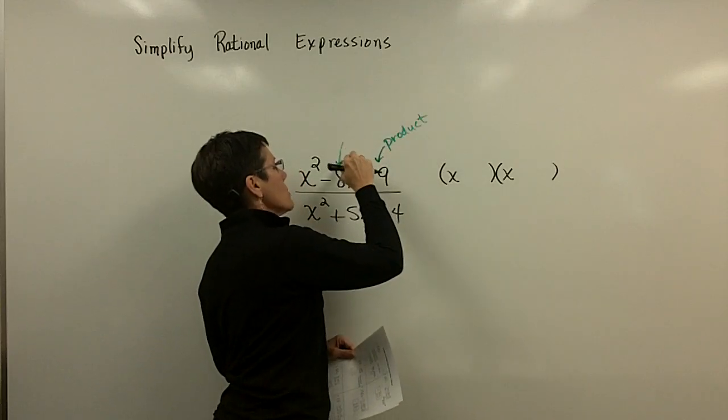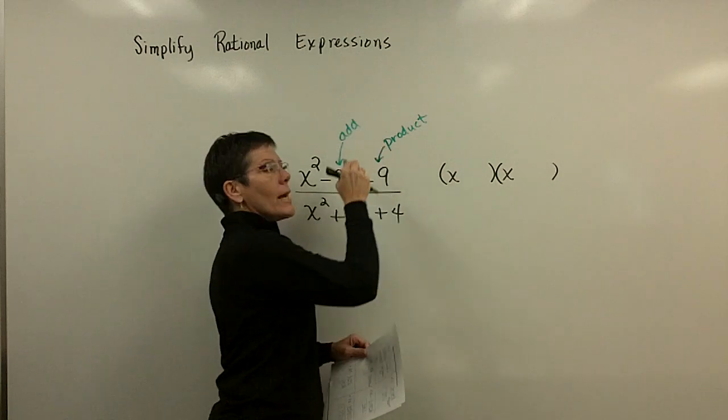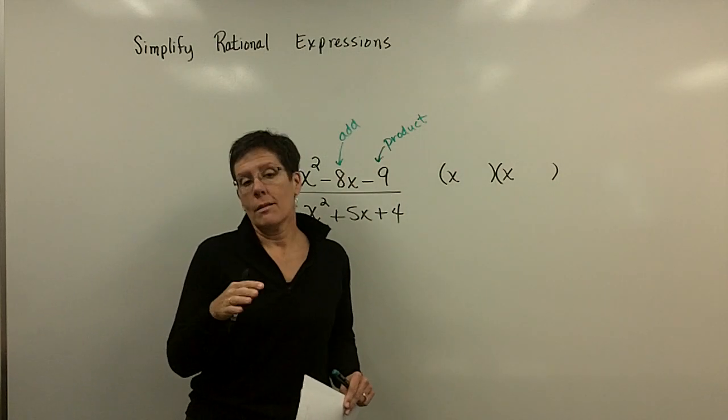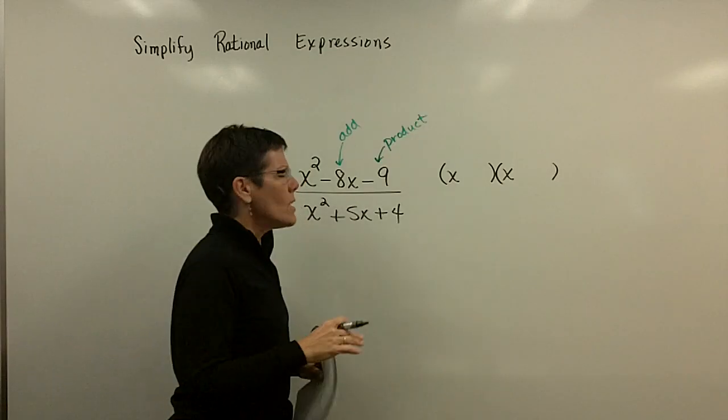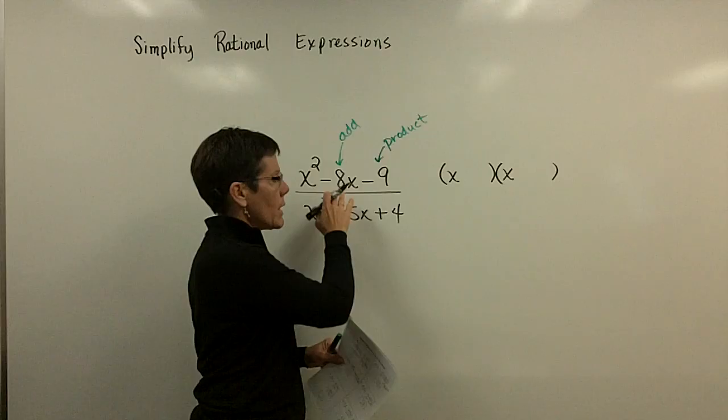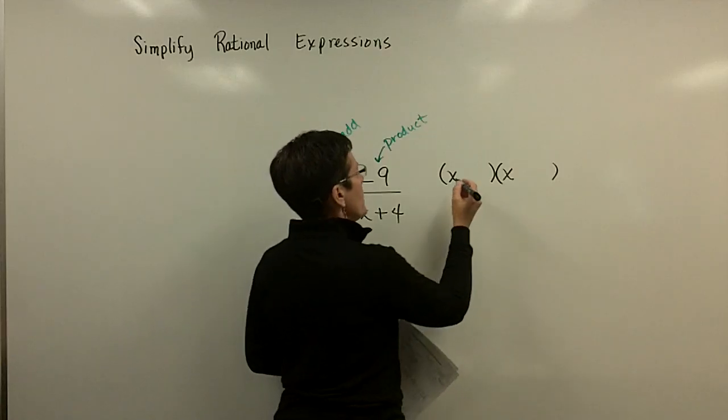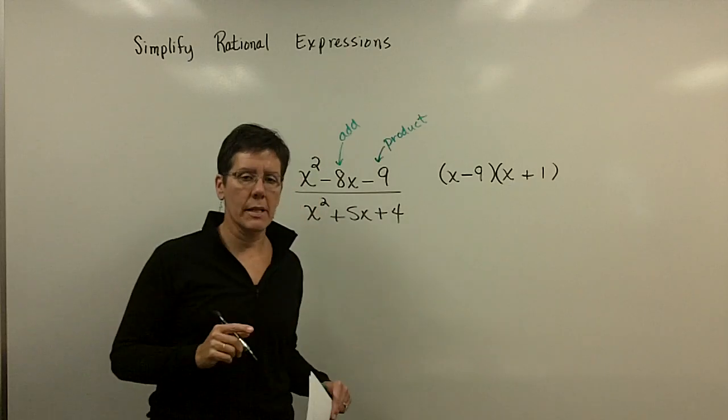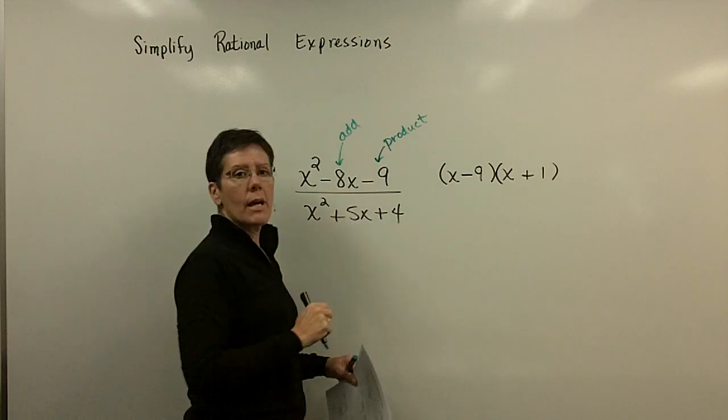And I want those numbers to add to be a negative 8. And I'm not going to bother with the tables and going through the list of factors. 3 and 3 aren't going to work. You know, 3 and a negative 3, they won't add up to be a negative 9. But a negative 9 and a positive 1 will multiply to be a negative 9, and they'll add to be that negative 8.